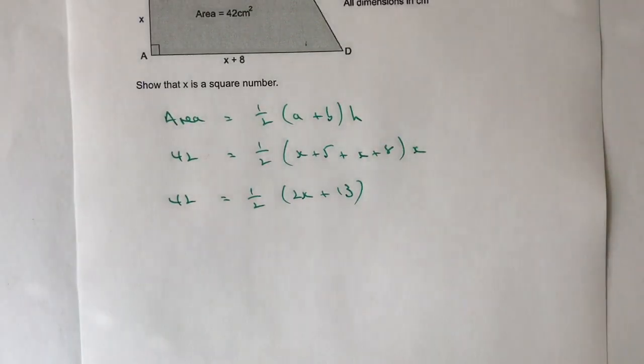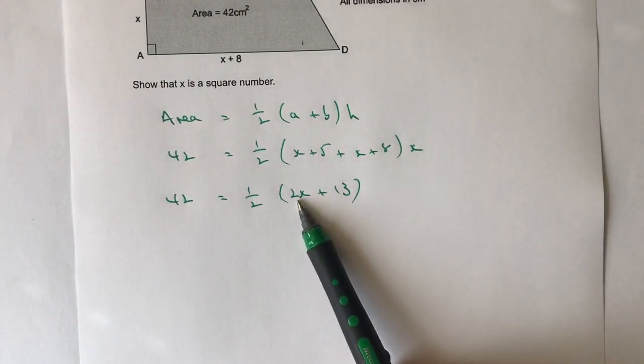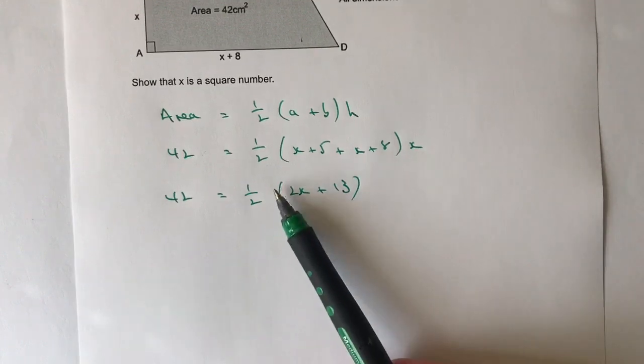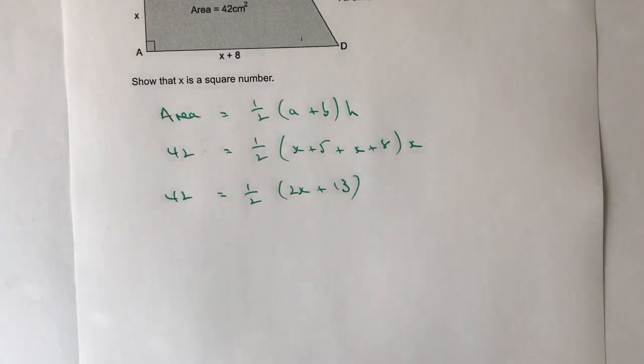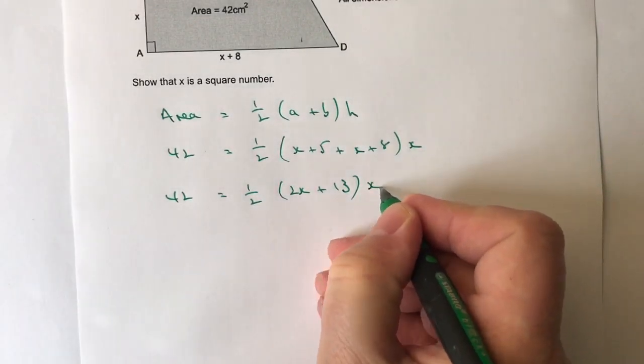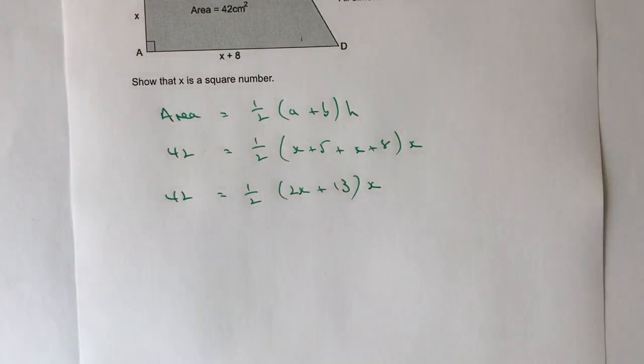13 bothers me a little bit because a half of 2x is x which is great. But a half of 13 is 6 and a half which isn't fantastic as a number. But we'll see where we end up with this. I've still got x at the end there.